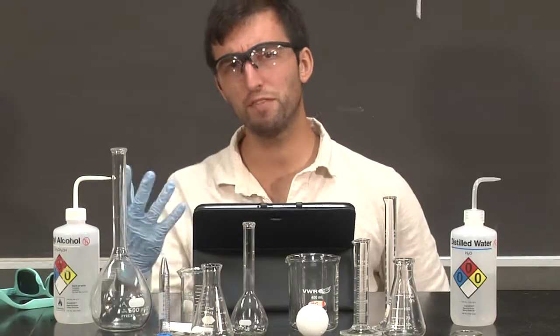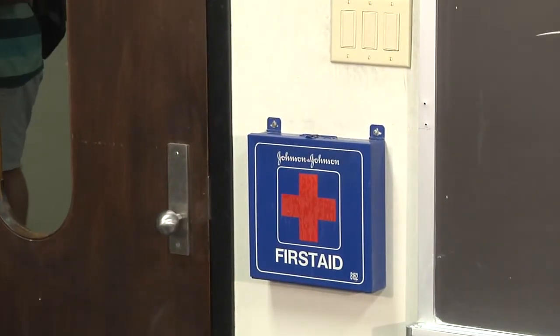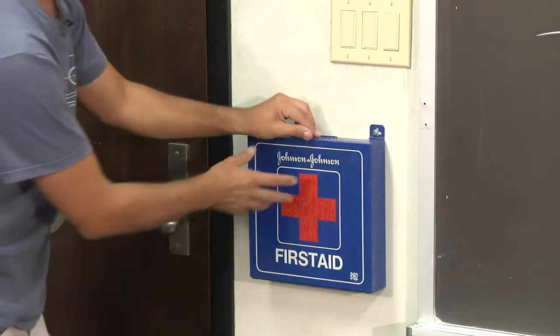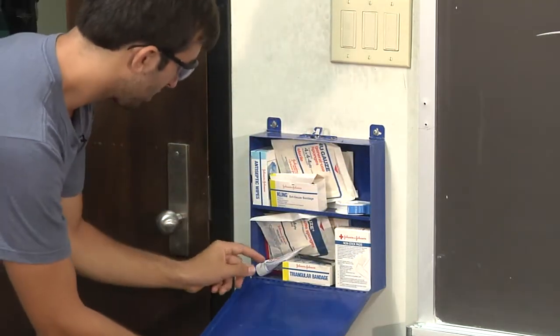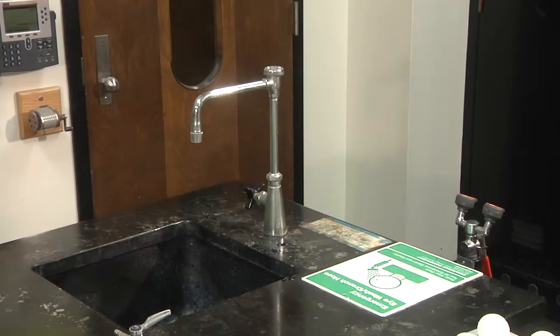Be familiar with the location of safety equipment. The first aid kit is typically found by the door. Inside of it you will find bandages, band-aids, gauze, hydrocortisone cream, scissors, and a lot of other good stuff.